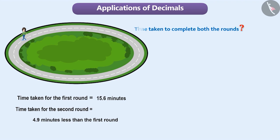We need to find out the total time taken by Manju to complete both rounds. To do this, we have to add the time taken for completing both rounds. It is given in the example that she took 15.6 minutes to complete the first round. To complete the second round, she took 4.9 minutes less than 15.6 minutes.